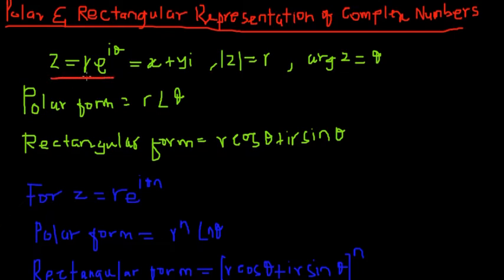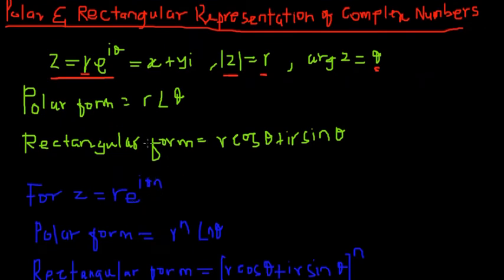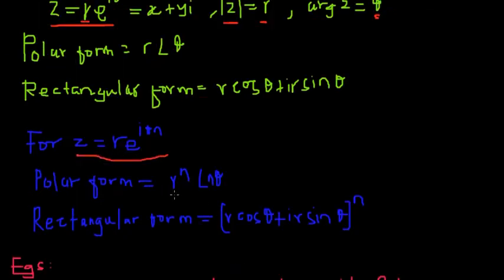So z — we already know that r represents the modulus and theta is our argument. We know the formula for finding the modulus and argument. After finding them, you sometimes need to convert into polar form, and sometimes into rectangular form. You would also have to convert from polar or rectangular form into exponential form — that's where you have powers of the complex number — and then convert back into polar form and rectangular form.